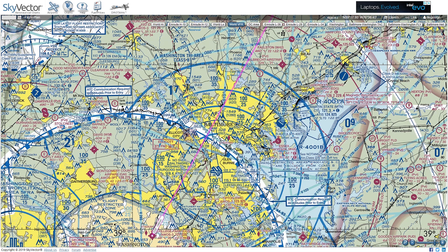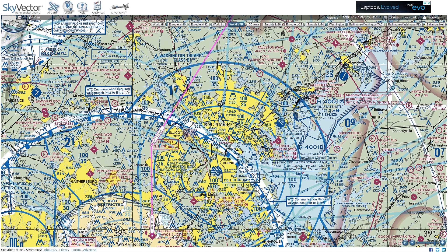Now if we're flying VFR, we notice that our flight path takes us through the surface Bravo of BWI Airport, so we can change our route to go west of it under the 2,500 shelf by clicking and holding along the line and dragging it out to around where we want to go. When we release the mouse button, we get options for what to add to the route. There's an airport and VOR nearby, or we could select a nearby fix or the exact latitude/longitude coordinates of the spot we dragged the line to. Let's use the nearby fix, Brave, and we see that adding that as an intermediate waypoint does keep us below the 2,500 shelf.